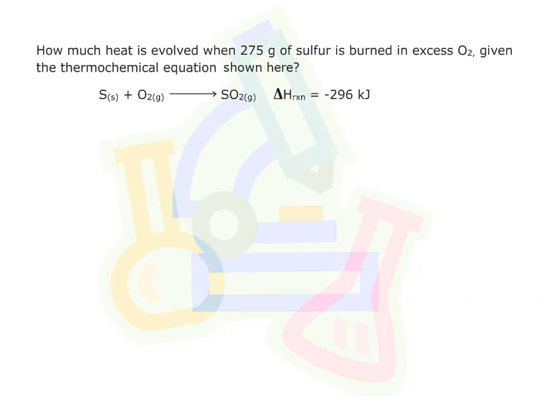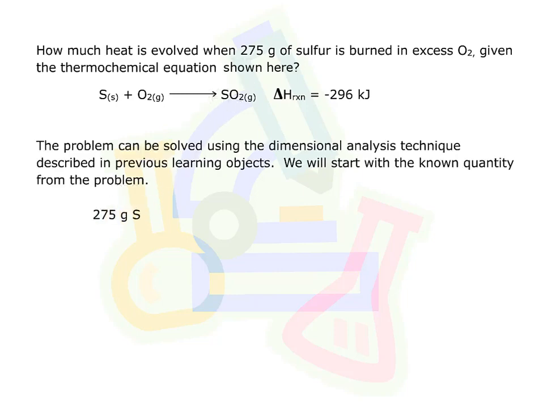How much heat is evolved when 275 grams of sulfur is burned in excess oxygen, given the thermochemical equation shown here? The problem can be solved using the dimensional analysis technique described in previous learning objects. We will start with the known quantity from the problem.